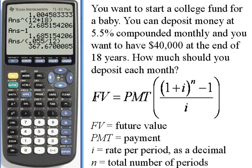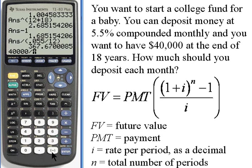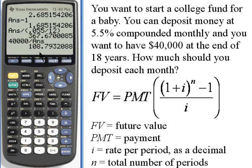So at this point I know that the future value, $40,000, equals the payment times 367.67. So if I divide the future value by this number, I'll get the payment amount. The future value is $40,000. I'll divide that by the answer using the second and answer button, which is right next to the enter button. What I get is $108.79.